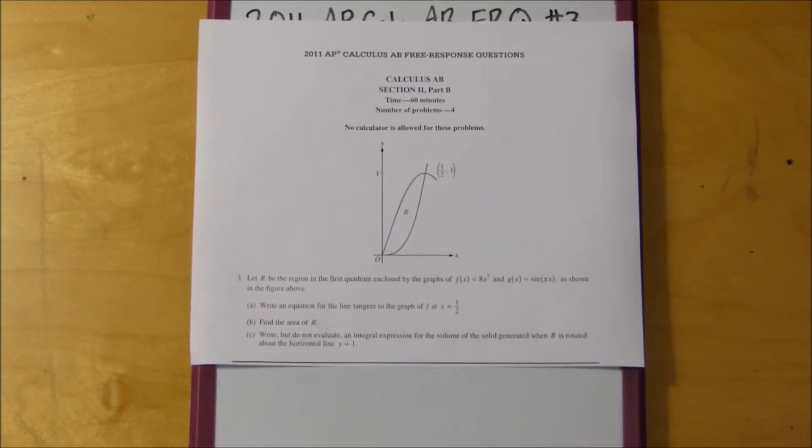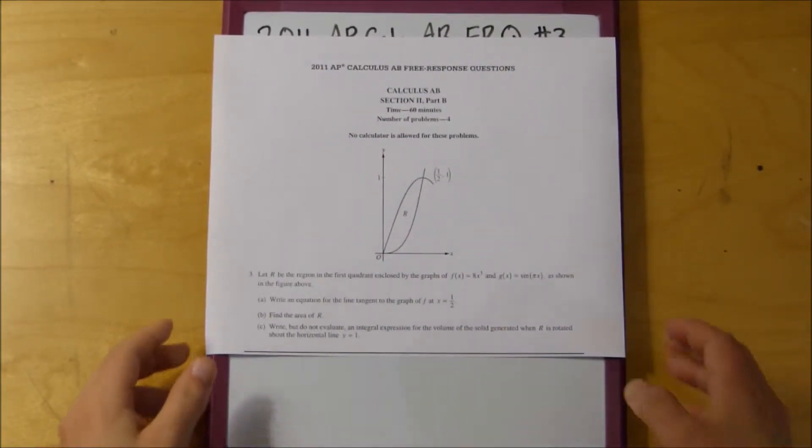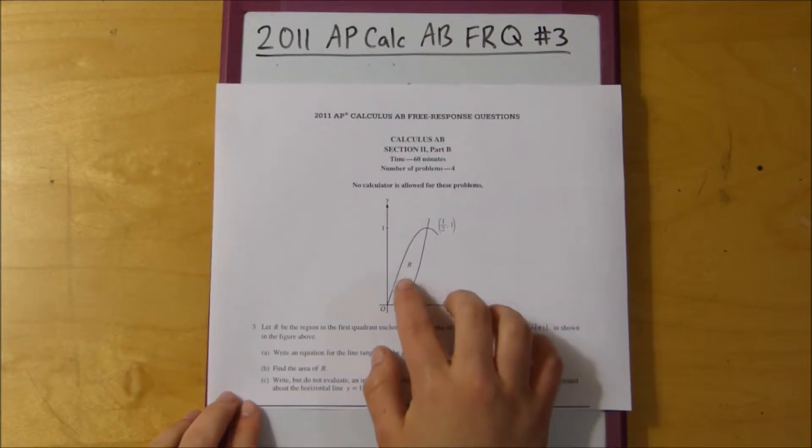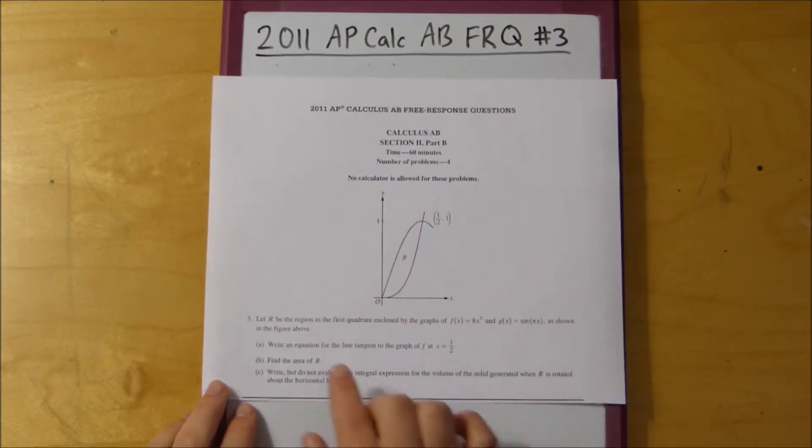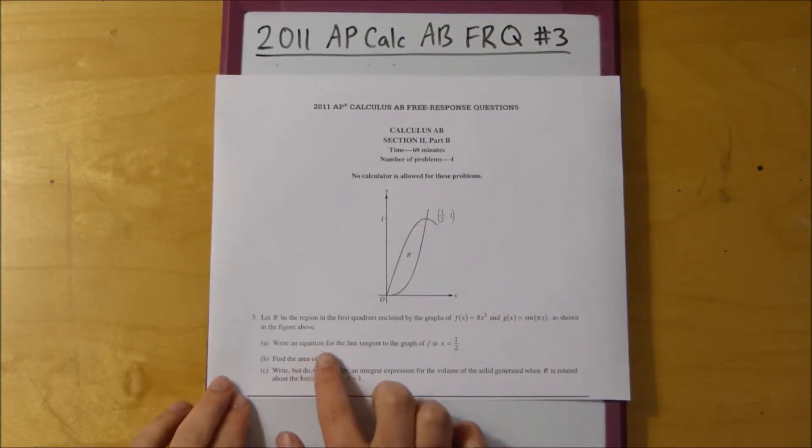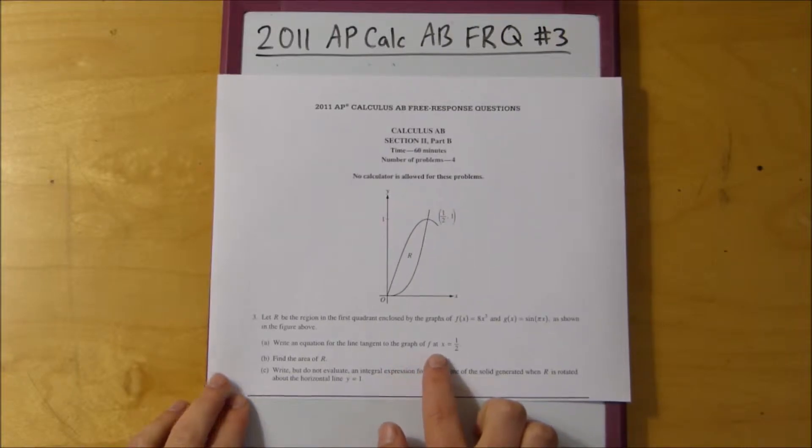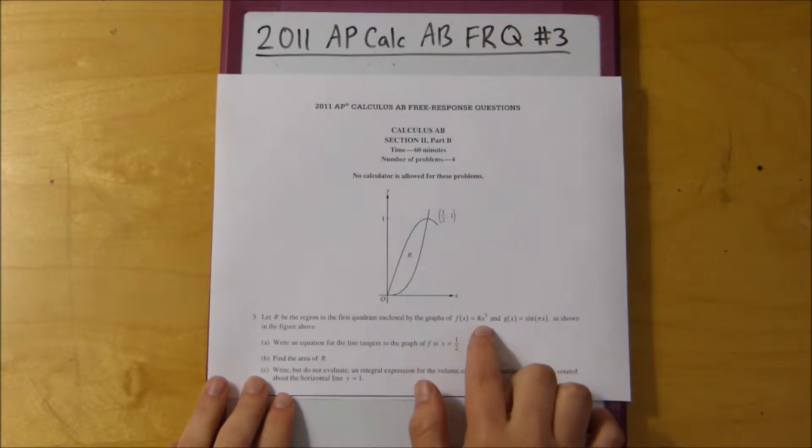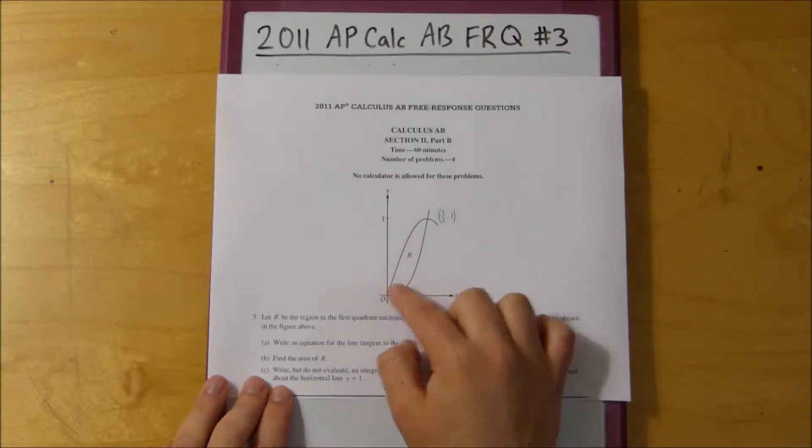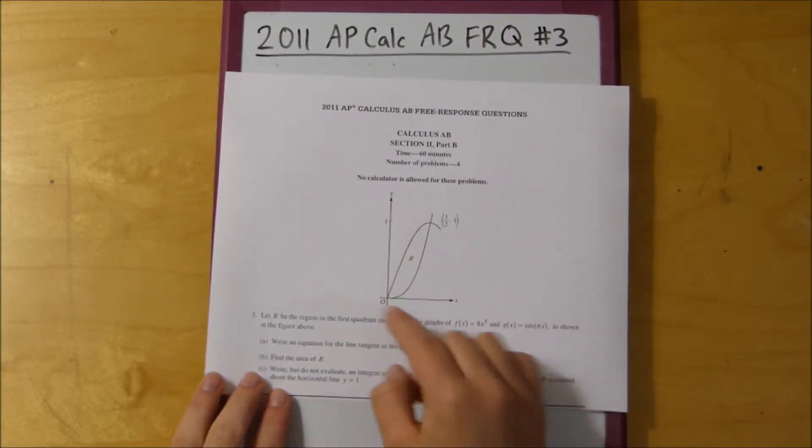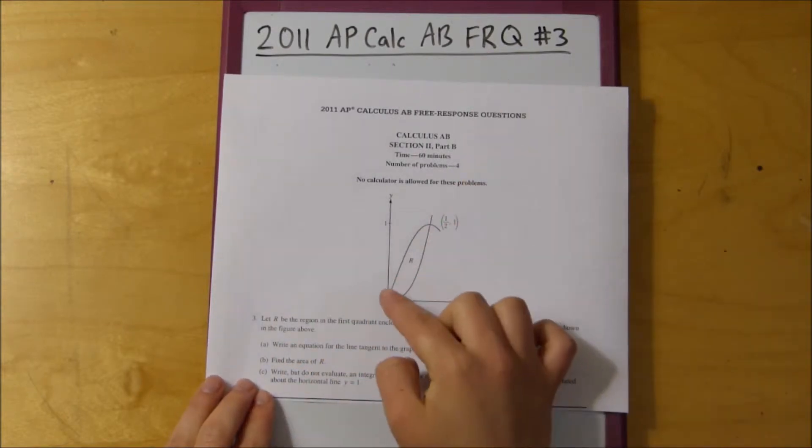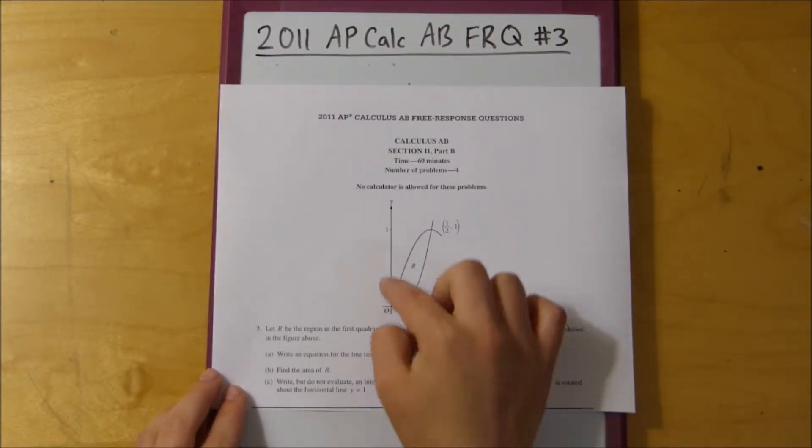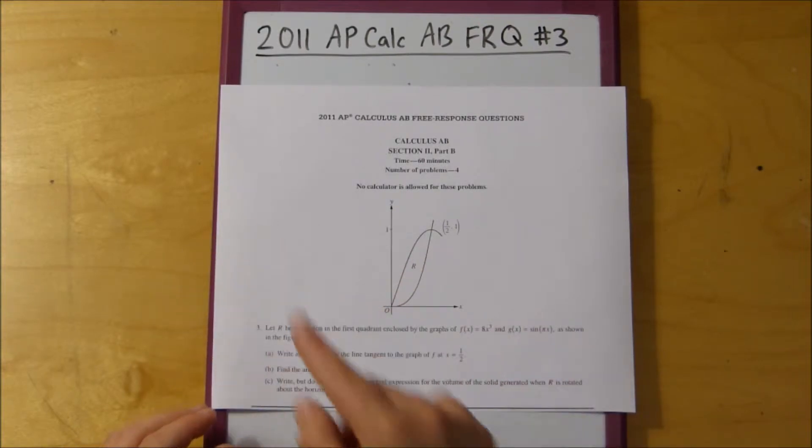So we have this shape here. Remember, we have this area, region R, and we're trying to find, for part A, the equation of the line tangent to the graph of F. So we know that F is 8 times x to the third, so it's this graph, because x to the third looks like this, and then g of x is sine, because of how a sinusoid moves.